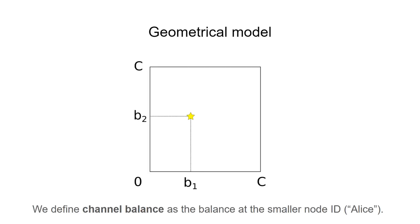So we suggest using a geometrical model. In this example, consider a two-channel hop with equal capacities equal to C. It corresponds to a square on a plane, and each point within the square corresponds to a possible position of the two balances.